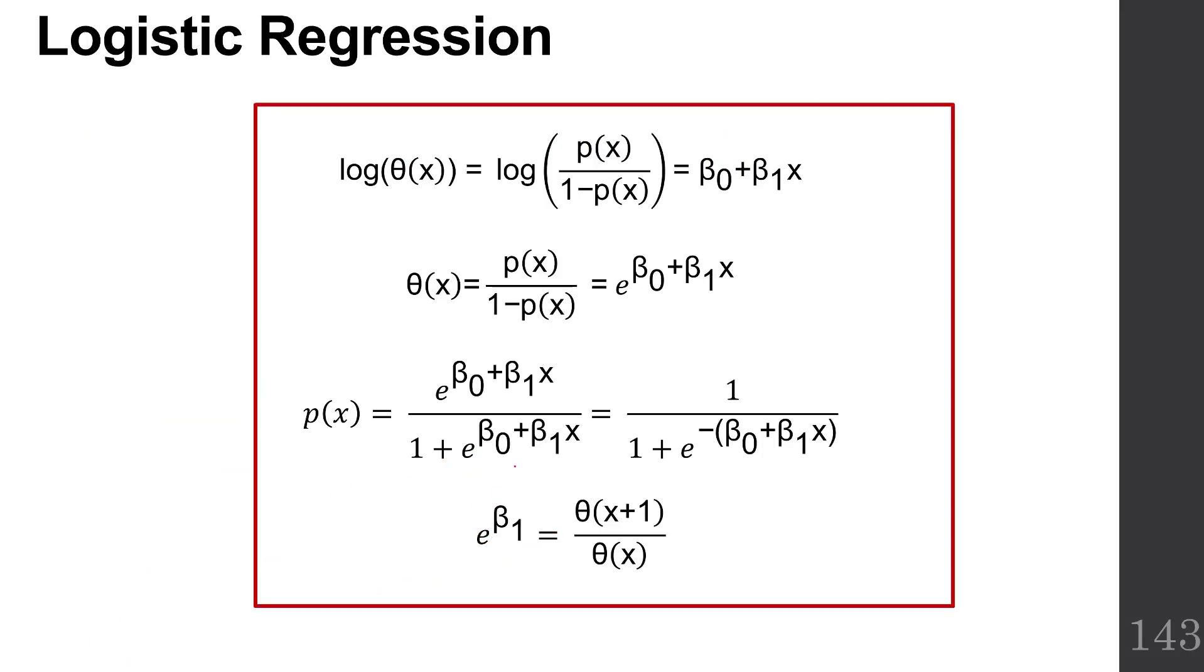So now we've worked through several equations. We've got four equations that we want you guys to keep a handle of. The first one says that the log odds are beta naught plus beta 1x. That's the top equation.